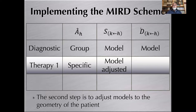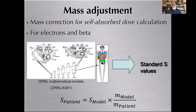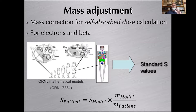As a conclusion for therapy, the first thing to do is quantitative imaging — by far the most demanding task. Then it is possible to adjust a reference model to the geometry of your patient, what I call model-adjusted S-value determination. For electrons and beta radiation, it's a very simple way to adjust S-values from a model to a patient by making the mass ratio of the organ of interest between the patient and the model. This works for beta radiation and electrons only, and specifically for self-absorbed dose. There is also a way to correct for gamma for variable mass, but it's not as simple as a trivial mass ratio.